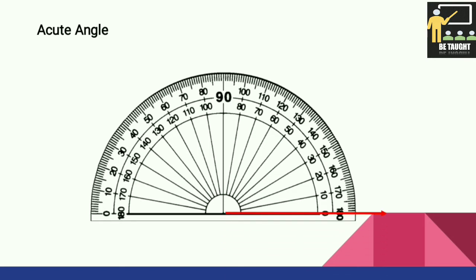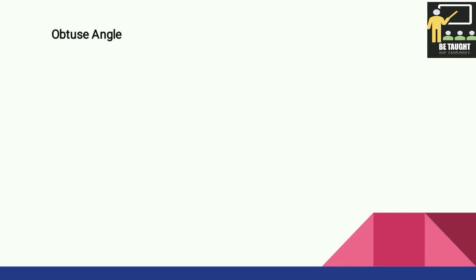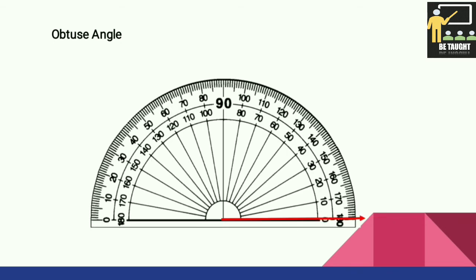For an acute angle, we start from zero degrees and it is less than 90 degrees. Here it measures 40 degrees, so it is an acute angle. If you see on the clock, an acute angle is also formed there, which is less than 90 degrees.